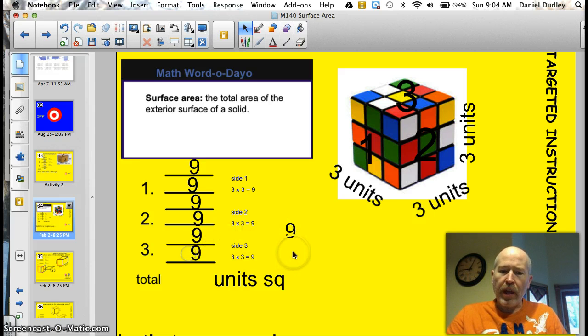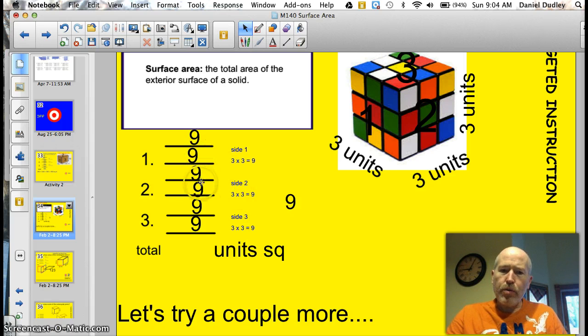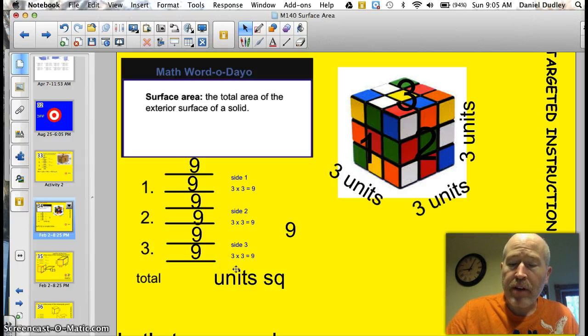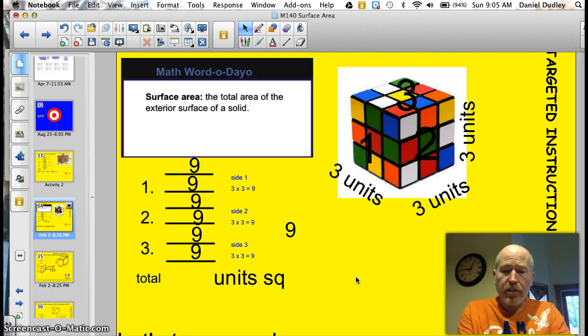So we have a total then of one, two, three, four, five, six. You should always have six numbers when you're adding up that surface area. If you haven't you've made a mistake. And remember you're only doing three problems but you're doubling them. So I've got nine times six which is 54, 54 units squared.